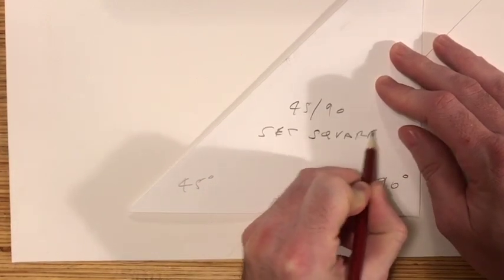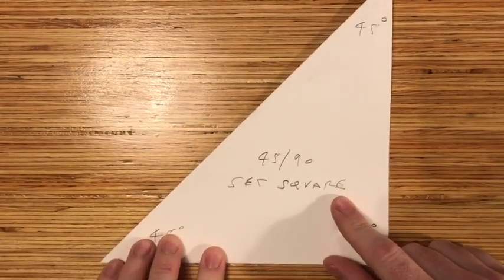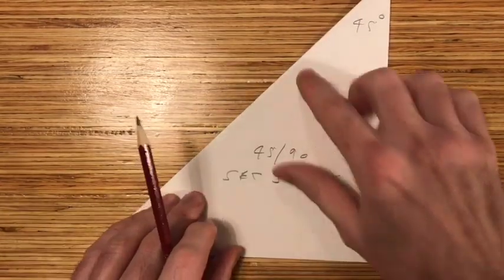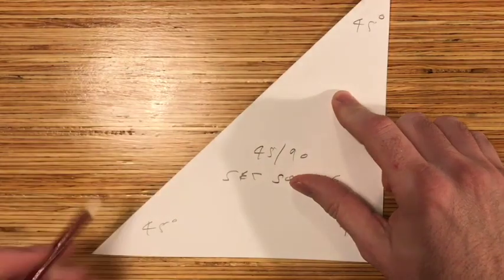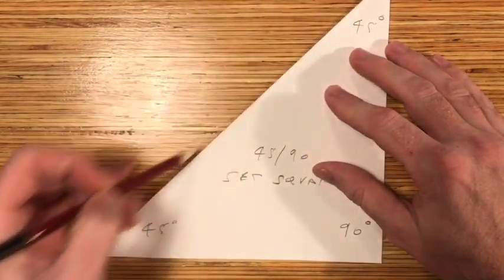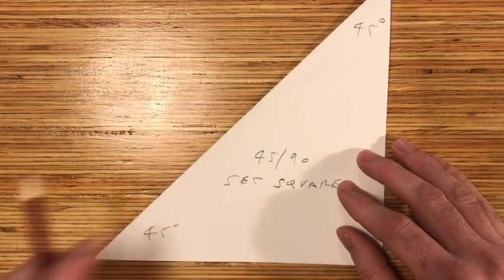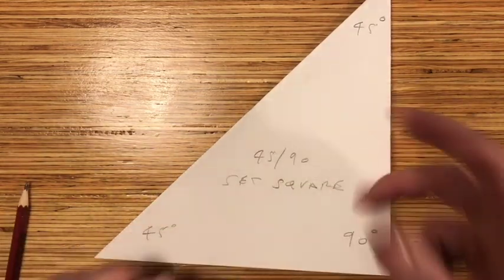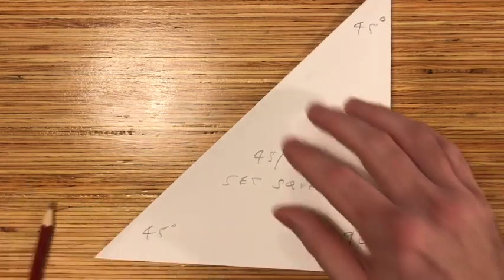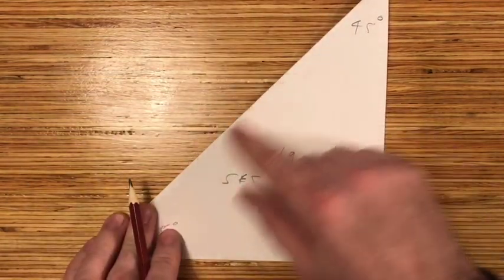If you've done this out of paper, what you could do is get some card and draw around this shape onto some card—back of a cereal box or some thin card—and then cut that out. That will give you a better edge when you're drawing.